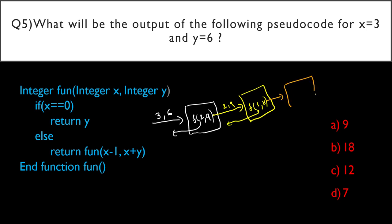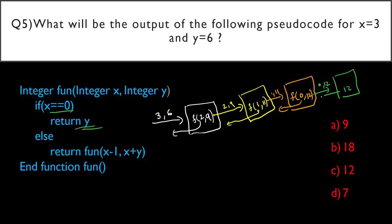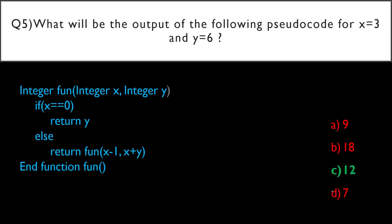Then fun(1, 11) — x ≠ 0, returns fun(0, 12) because 1 - 1 = 0 and 1 + 11 = 12. Finally fun(0, 12) — x = 0, returns y = 12. That 12 propagates all the way back. Option C, 12, is the correct answer — simple recursion, just trace it out.